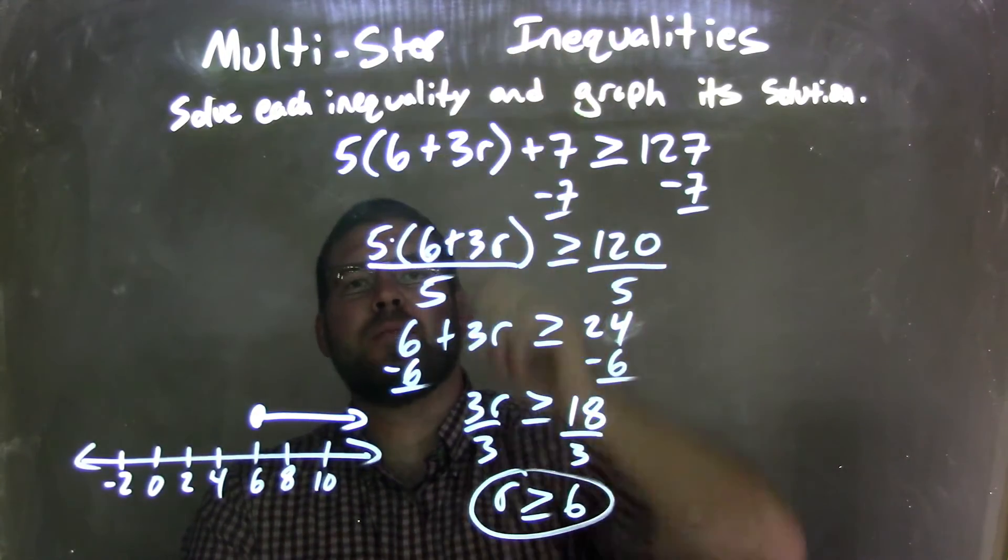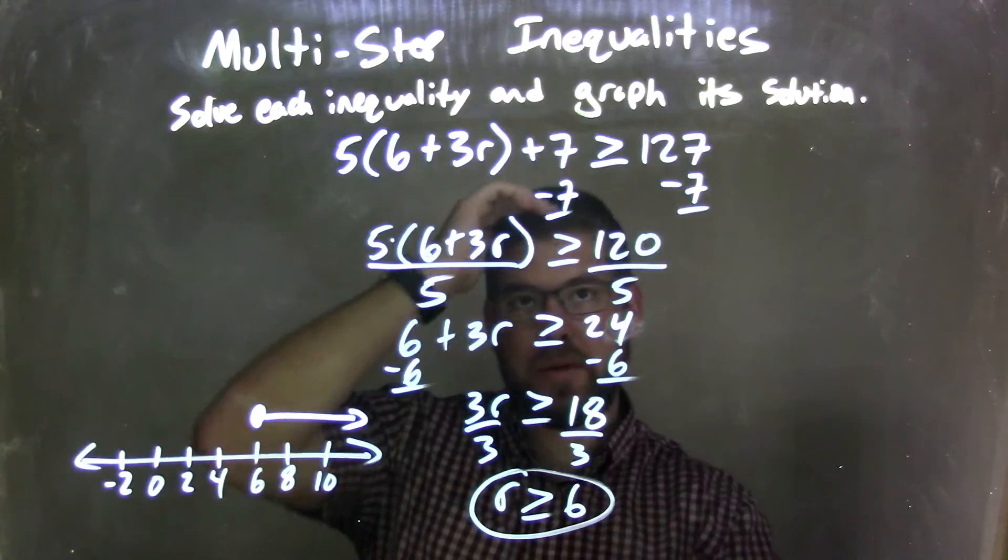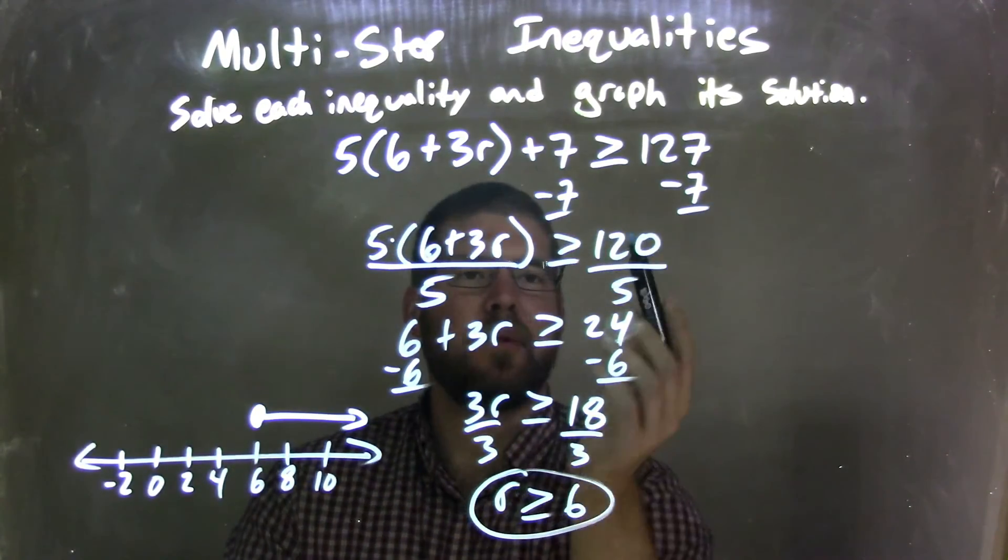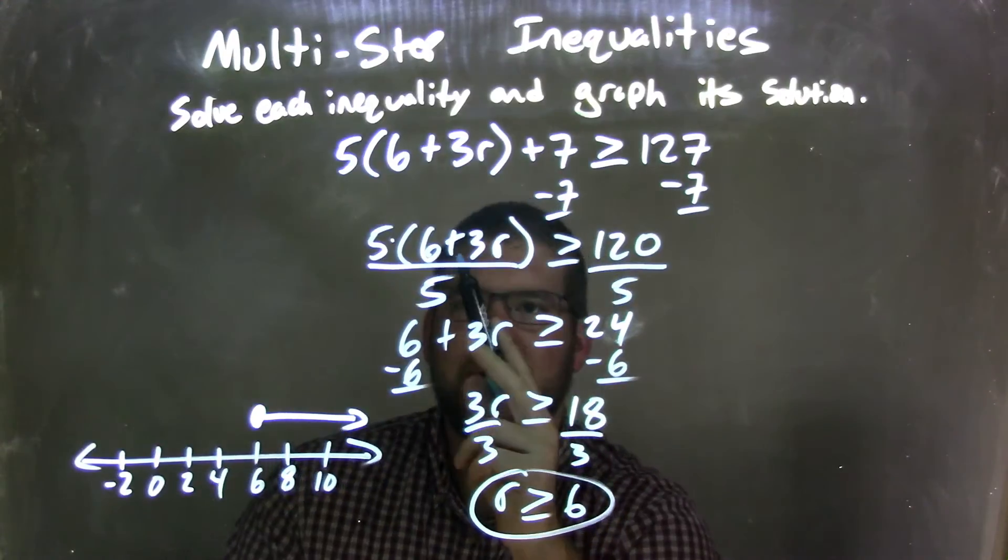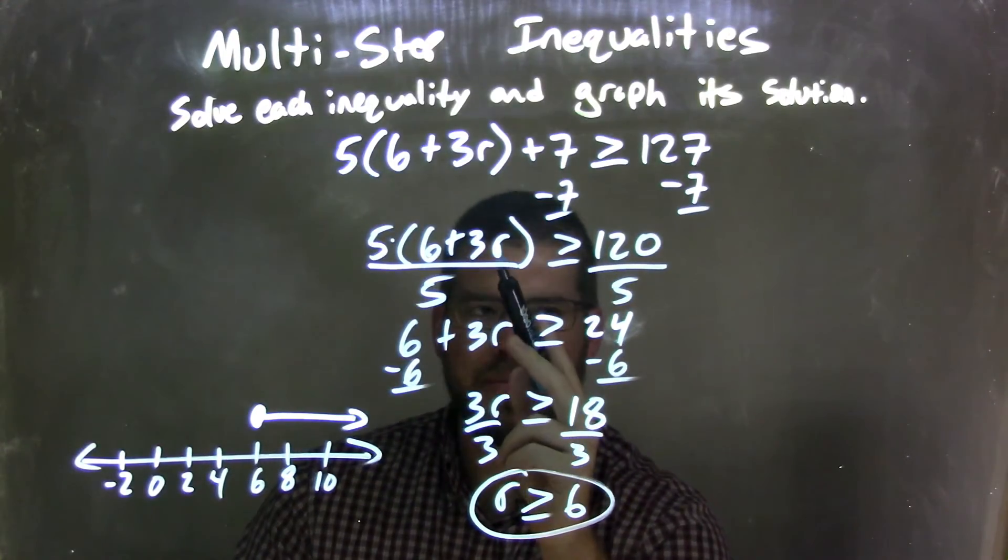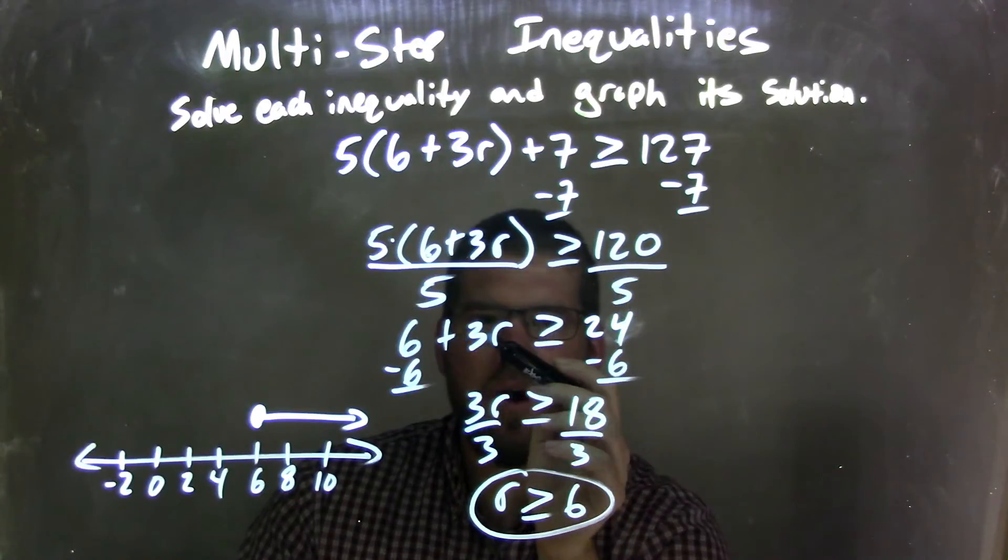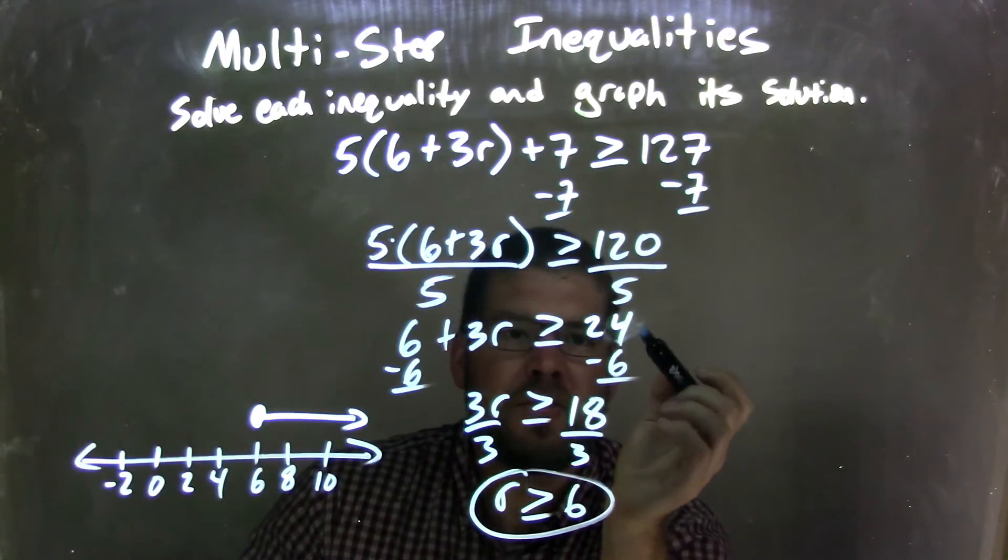So let's recap. We have 5 times parentheses 6 plus 3R, closed parentheses plus 7 is greater than or equal to 127. I subtracted 7 from both sides, giving me 120 on the right and 5 times parentheses 6 plus 3R on the left. I then divided by 5 on both sides, giving me 6 plus 3R on the left and 120 divided by 5 is 24.